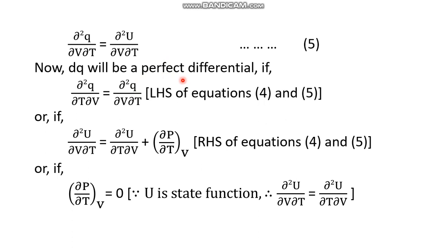If the left-hand sides are equal — assuming dq to be a perfect differential — then the right-hand sides must also be equal. The right-hand side of equation five is ∂²u/∂V∂T, and the right-hand side of equation four is ∂²u/∂T∂V plus (∂p/∂T)_V. Since u is a state function, ∂²u/∂V∂T equals ∂²u/∂T∂V, so these cancel, and the remaining term (∂p/∂T)_V must equal zero.